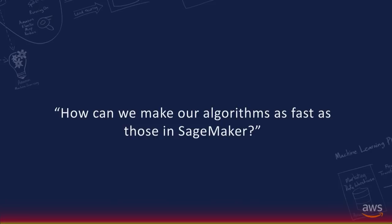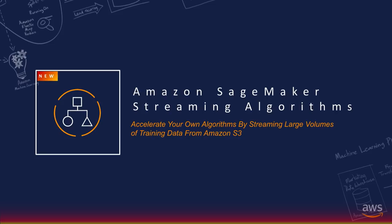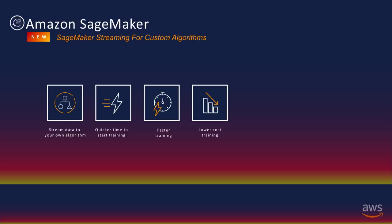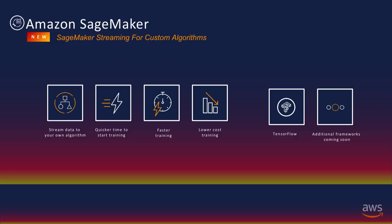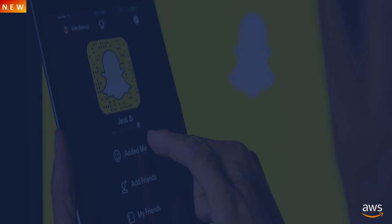Customers asked us: how can we make our own algorithms as fast as the Amazon-provided SageMaker algorithms? That's something you can do with a lot of engineering and C++ back-end code, but we've done that for you. We recently announced Amazon SageMaker Streaming algorithms — a mechanism to replicate what we do to accelerate your algorithms by streaming large volumes of training data from Amazon S3 into SageMaker. It tricks the platform into thinking it's seeing the entire dataset, so training starts faster, takes less time, and saves money. Currently available for TensorFlow, soon for many other frameworks. Snap pushed us on this feature because they analyze large volumes of images.